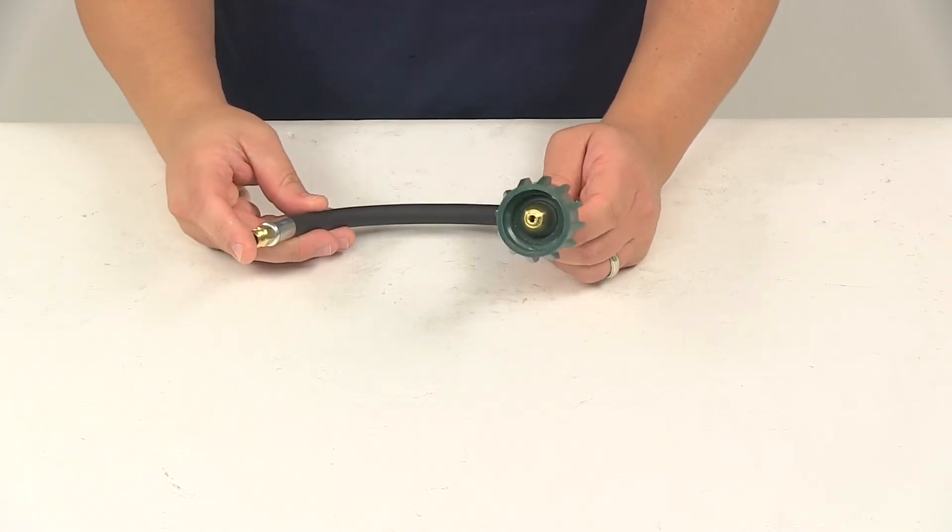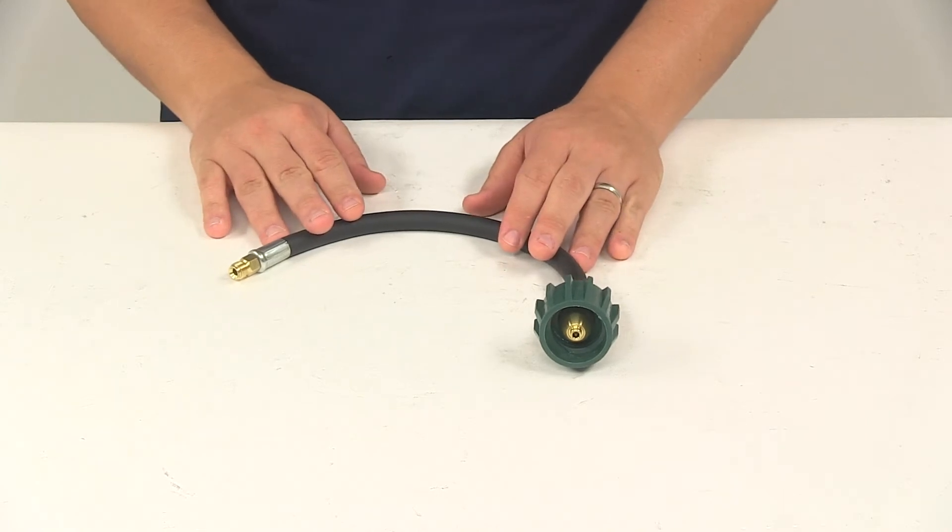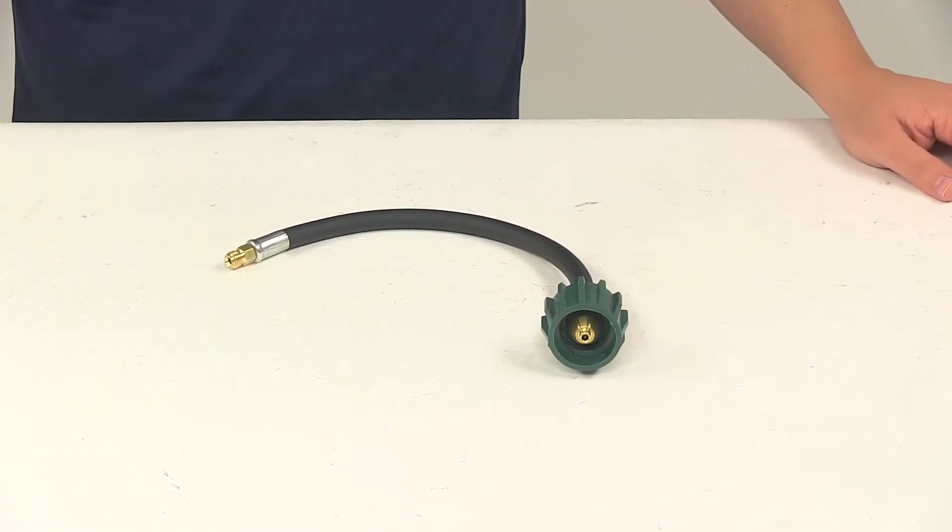Maximum flow capacity is 200,000 BTUs per hour. That's going to do it for today's look at the MB Sturgis Propane Pigtail Hose.